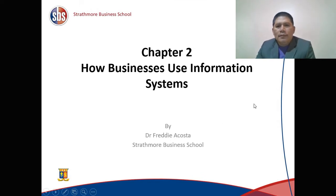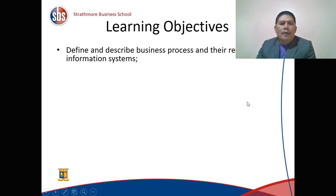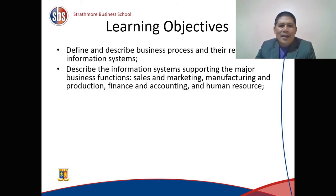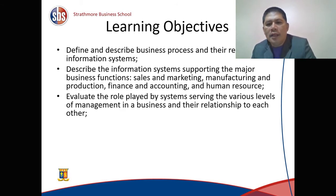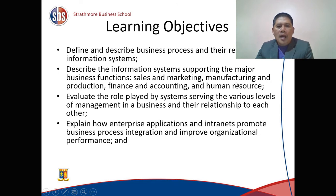For the objectives of this presentation, we're going to define and describe business processes and their relationship to information systems. We'll describe the information systems supporting the major business functions: sales and marketing, manufacturing and production, finance and accounting, and human resource. We'll also evaluate the role played by systems serving the various levels of management in a business and the relationship to each other.